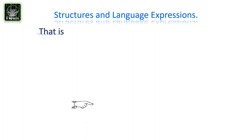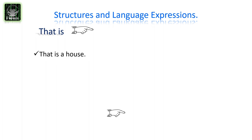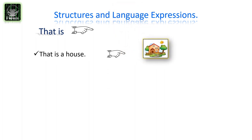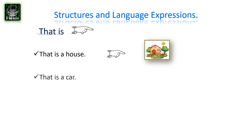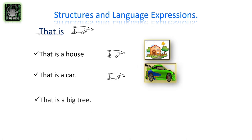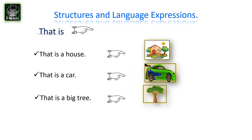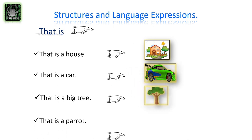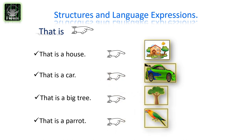Let's look at more examples using 'that is': That's a house. That's a car. That's a big tree. That's a parrot.